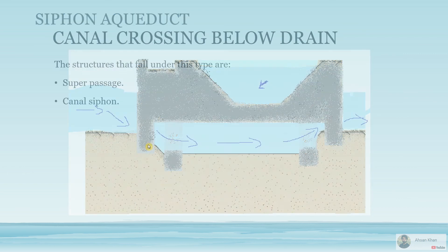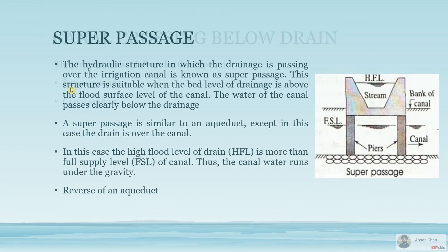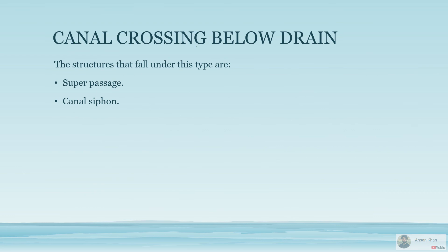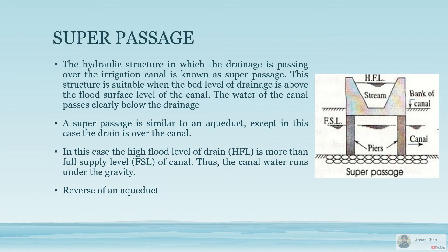The next type is super passage, where the canal is below and the drain is above. It is a simple one in which the stream or river is above and the canal is below. The canal passes below, the stream goes above, the HFL is marked, and you can see the FSL is below the bed level of the river. This is the opposite of the aqueduct.